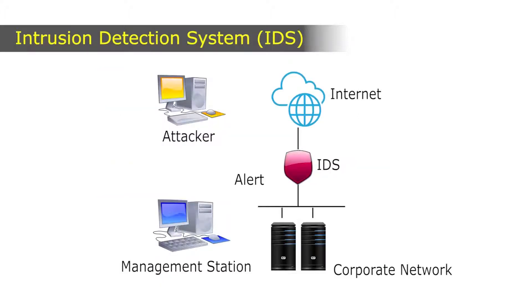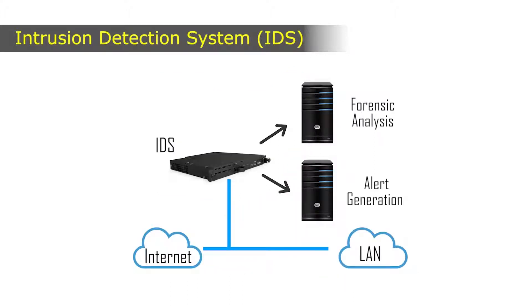Through IDS, one can monitor the network for malicious activities, and sometimes it is prone to false alarms or false positives. IDS have to be configured properly. IDS basically do two jobs, namely forensic analysis and alert generation.